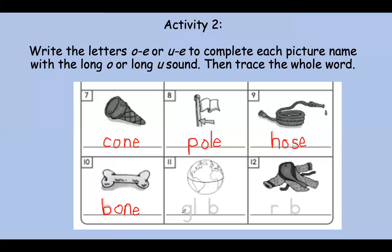This is a globe — it shows us the whole world. Say globe. You're getting these so quickly — it is a long O sound. Remember that E at the end is what's making the vowel in the middle say its name. So it's super important that we put it there. Even though we don't hear it, it has a very important job.